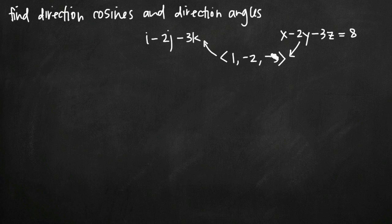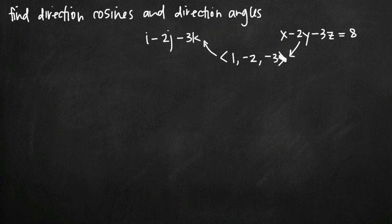Once we have our direction numbers, this represents a vector — a vector that starts at the origin with an initial point at 0, 0, 0, and goes out to a terminal point of 1, negative 2, negative 3 in three-dimensional coordinate space. So this is a vector. We have two points on the vector: 0, 0, 0 and 1, negative 2, negative 3. We can use those two points to find the length or the magnitude of this vector.